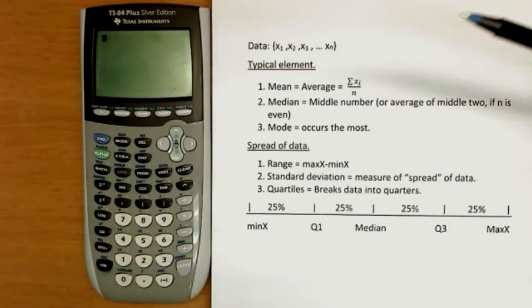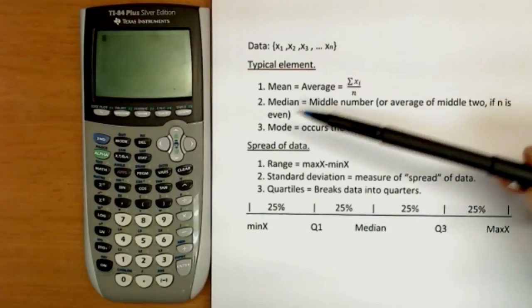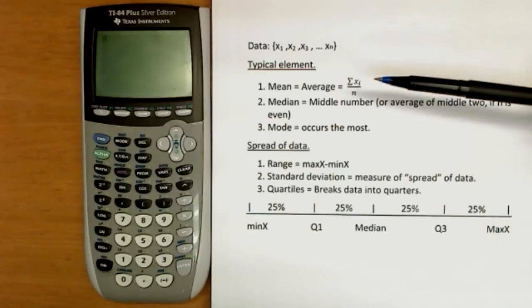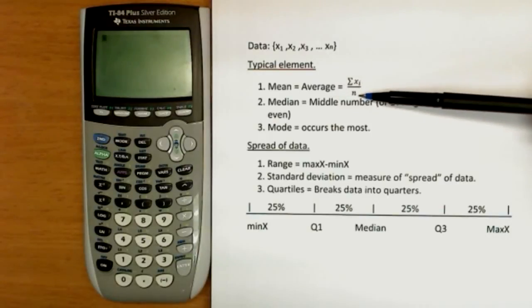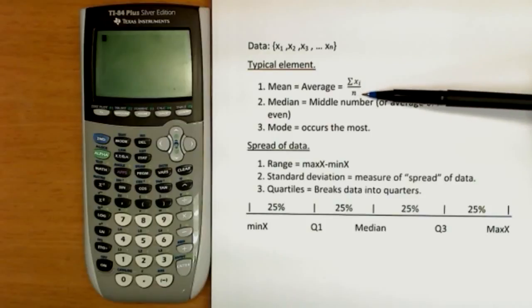So we want to be able to say what a typical element of our data is, and we're going to have three that we use commonly in statistics. The mean or the average, you probably already know how to do. What we do is we add up all the data and divide by how many we have, or n, the number of pieces of data.